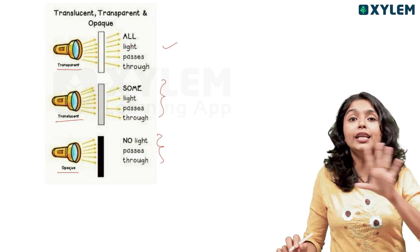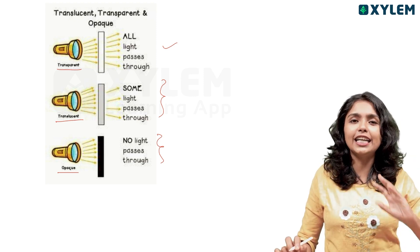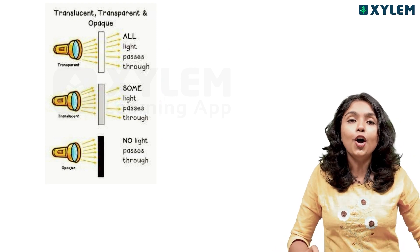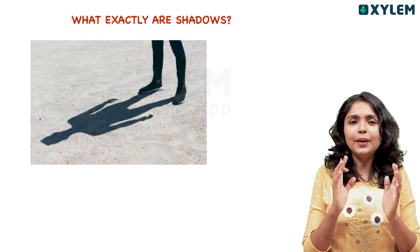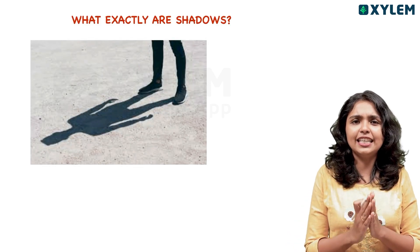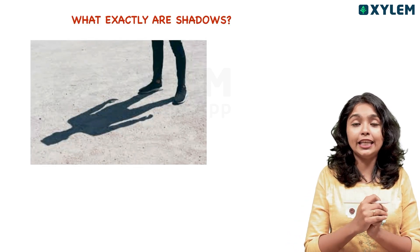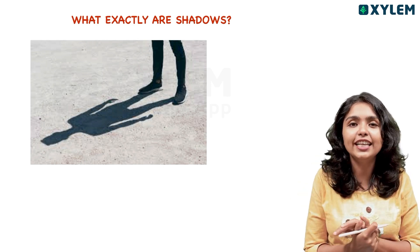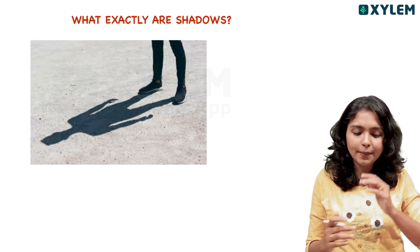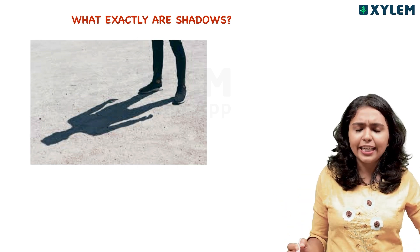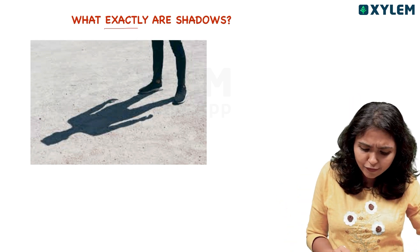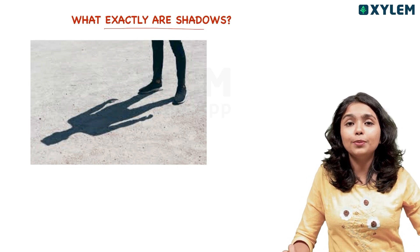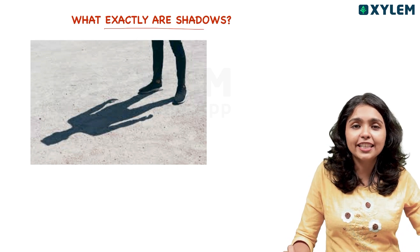We look at opaque objects. These objects have a relationship with shadows. What exactly are shadows? Any opaque object can create shadows.